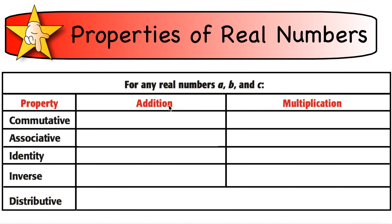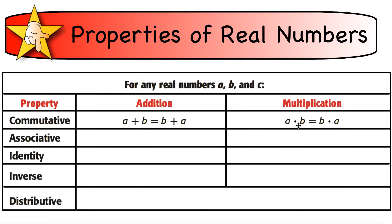We have some properties of real numbers that you also need to be able to recognize. Some of these you should already know — the commutative, associative, and distributive properties, which you should have learned in 7th and 8th grade. The commutative property of addition says that the order you add numbers doesn't matter; you'll get the same thing either way. Same with multiplication — it doesn't matter how you multiply them, you get the same number.